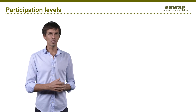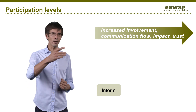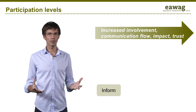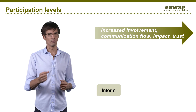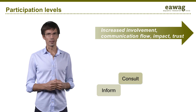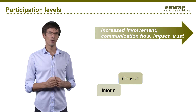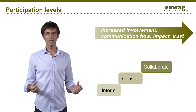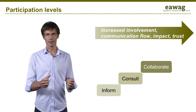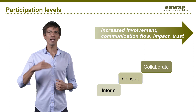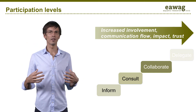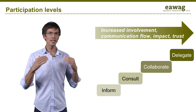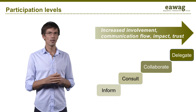The lowest participation level is information. Information goes one way — you give information to someone. For example, it is important to keep influential people at least informed. The second level is consultation, which goes two ways — you ask people for their opinion. The third participation level is collaboration, where you work on an aspect together. And finally, the higher level of participation is empowerment or delegation, where you give power to the others. Each level represents an increased involvement, communication flow, impact and trust.